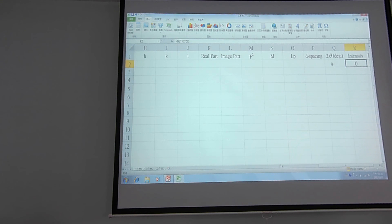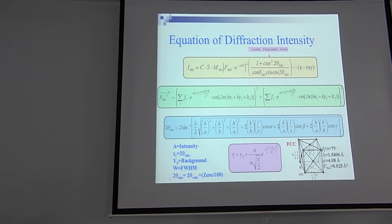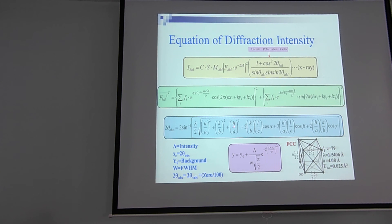Now we need to calculate the 2θ value. Let's go to page 3. In the equation for a cubic system, all angles α, β, γ are 90 degrees, so the cross terms become zero. We only need: 2θ = 2·arcsin(λ/2 · √(h²/a² + k²/b² + l²/c²)). Note there was a typo — it should be L, not another variable.